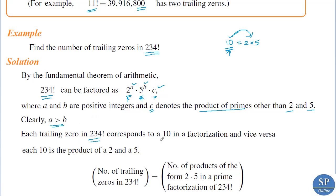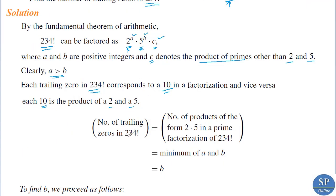Each trailing zero in 234 factorial corresponds to a factor of 10 in its factorization, and each 10 can be expressed as 2 times 5. So the number of trailing zeros in 234 factorial is the number of products of the form 2×5 in the prime factorization of 234 factorial. For example, 2×5 gives 10, and another 2×5 gives another 10, so two such products mean two trailing zeros.